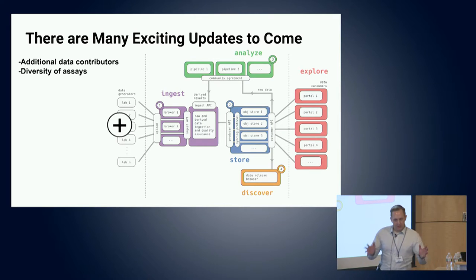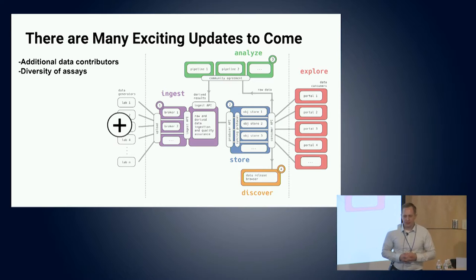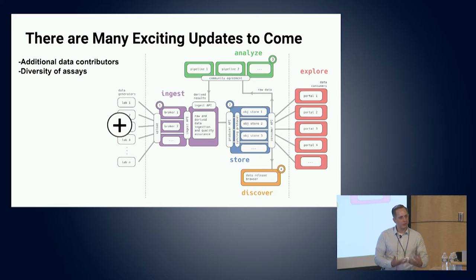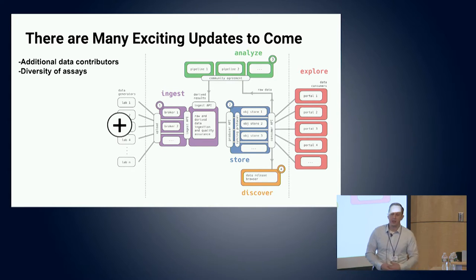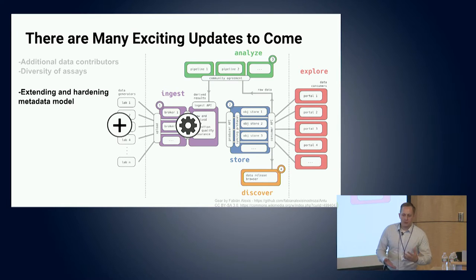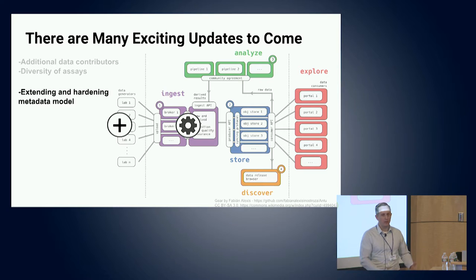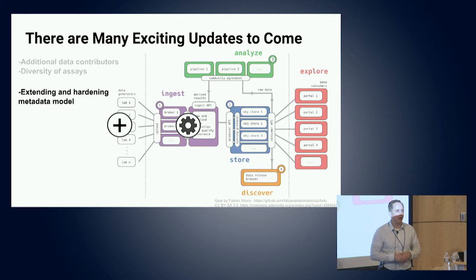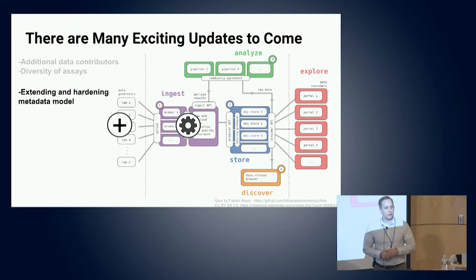Where are we going? Well, this is a dynamic project with lots of things happening. First, our data wranglers will continue to work in bringing in additional data, the same modalities, and also working with other data contributors that might bring in other modalities - hopefully building our diversity of assays. As that happens, we'll need to extend and harden the metadata schema. Make sure that with new data types that come in, we can actually describe them well. Our metadata team is already doing that as they think through the imaging data, for instance.